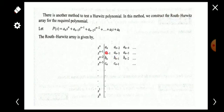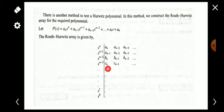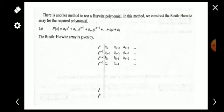Similarly, b_(n-1) = [a_(n-1) · a_(n-4) − a_n · a_(n-5)] / a_(n-1). Note: a common mistake is to use a_(n-3) as the denominator for subsequent b terms — but for all b terms, always keep a_(n-1) as the denominator. For c_n: c_n = [b_n · a_(n-3) − a_(n-1) · b_(n-1)] / b_n, and likewise all other c terms use b_n as the denominator.